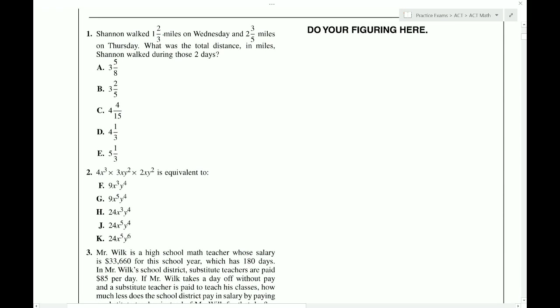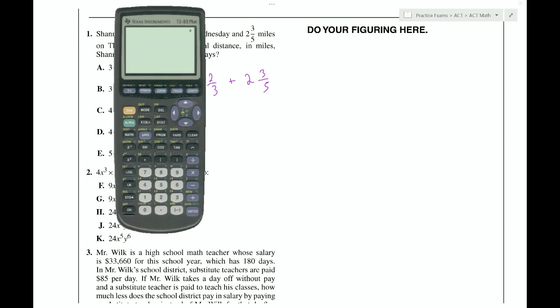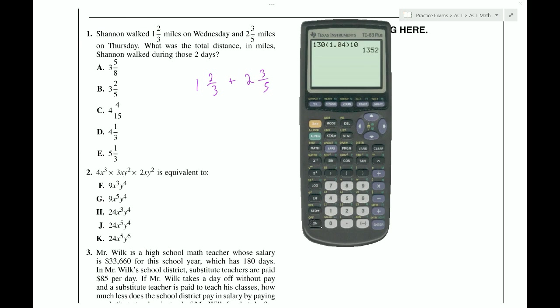Question one, Shannon walked one and two-thirds miles on Wednesday and two and three-fifths miles on Thursday. What was the total distance in miles Shannon walked during those two days? So we simply have to add these two fractions. So this is simple if you have usage of the calculator, which we do for ACT. So we'll grab our calculator and we'll put in one plus two-thirds, return that, plus two plus three-fifths.